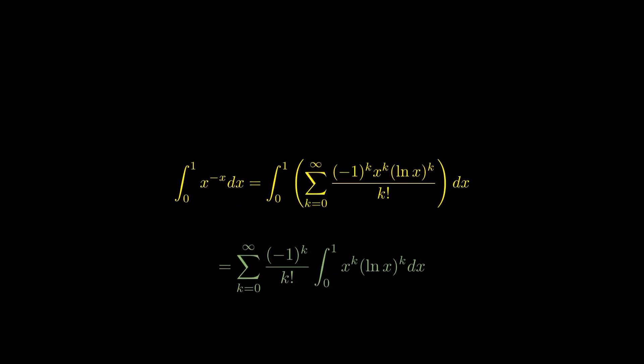This allows us to integrate term by term: the sum from k equals 0 to infinity of negative 1 to the k over k factorial times the integral from 0 to 1 of x to the k times natural log x to the k with respect to x. Our task now is to evaluate that general integral form within the sum.